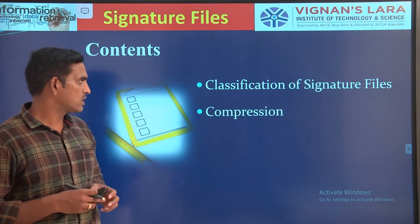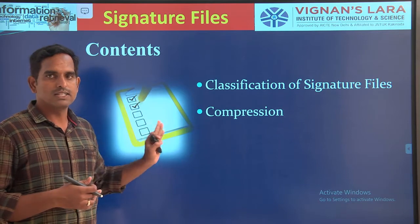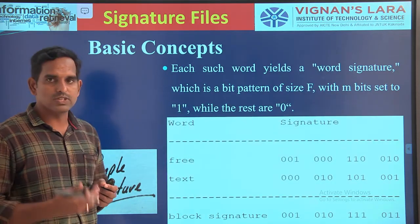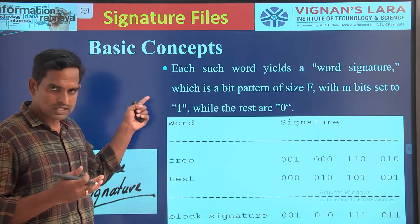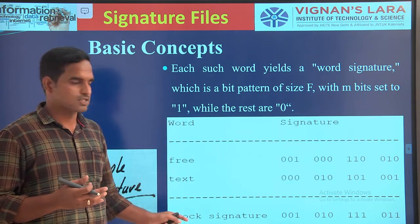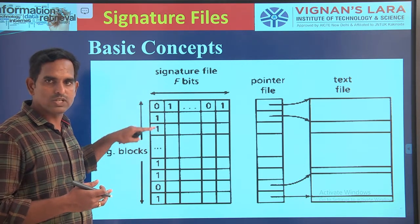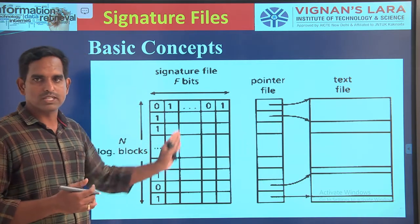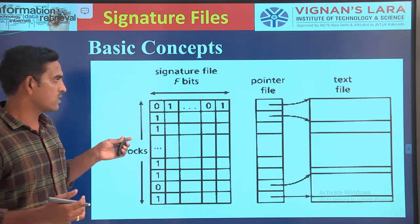In the previous session, we thought about the signature files and the sequential signature file. We will be breaking down your particular documents into blocks, and each block will have its own set of words. Each word will be converted into a word signature, and from those word signatures we will be getting our block signatures. Using those block signatures, we will be placing them row by row in a sequential fashion — that is why we call it a sequential signature file. Each sequential signature file has three parts: the signature file, the text file, and the pointer file, which points to the individual blocks.